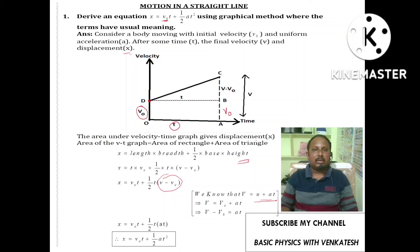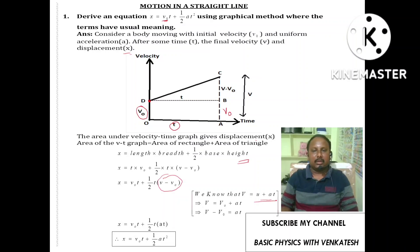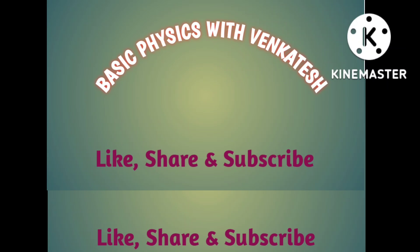By using the graphical method, we have derived the equation x equal to v-naught t plus half a t-squared. Thank you.